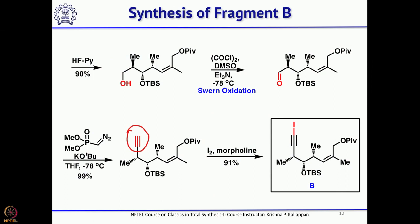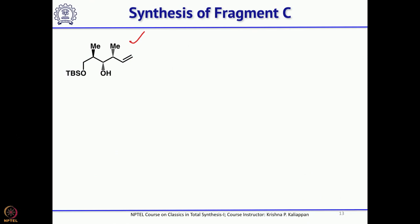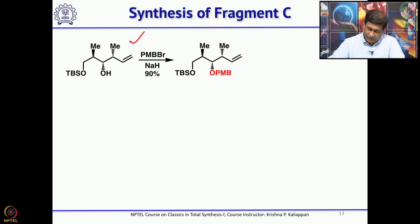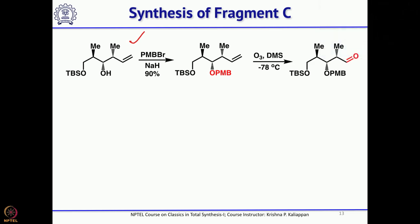Fragments B and C were made from the same intermediate. Schreiber took this common intermediate and protected the secondary alcohol as a PMB ether — using sodium hydride and PMB bromide (para-methoxybenzyl bromide) — because at some point differential removal of protecting groups would be needed. Then ozonolysis gave the aldehyde, and treatment with methylmagnesium Grignard gave the secondary alcohol.